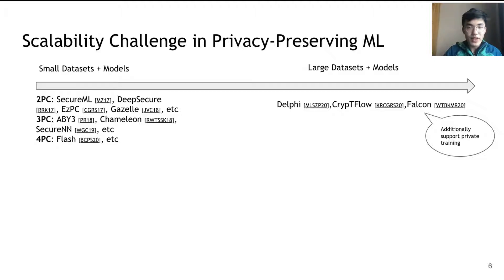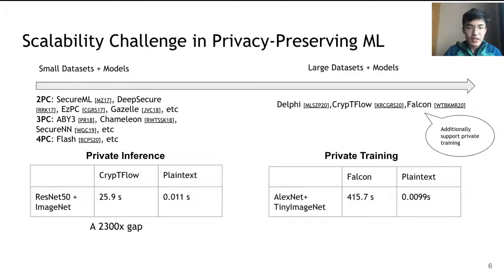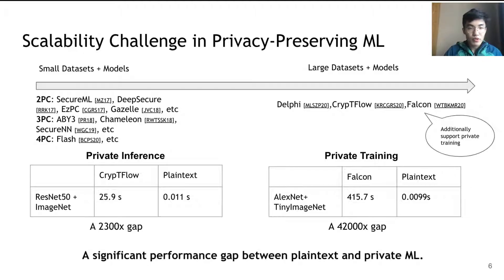Despite recent advances, there is still a significant performance gap between privacy-preserving machine learning and plaintext machine learning. In the case of private inference, the state-of-the-art work CryptFlow has a 23,000x gap compared to plaintext inference. In private training, the state-of-the-art work Falcon has a 42,000x gap compared to plaintext training. Therefore, there is still a significant performance gap to close.